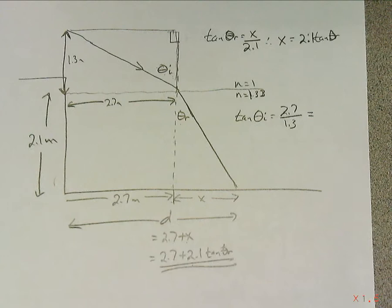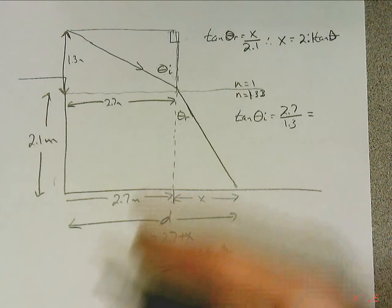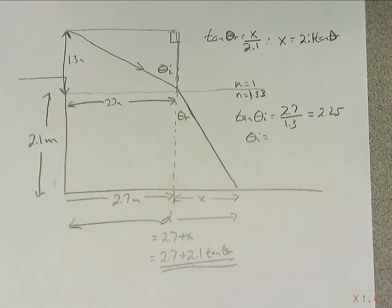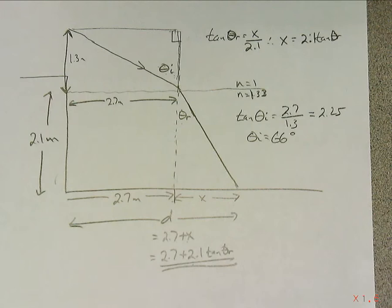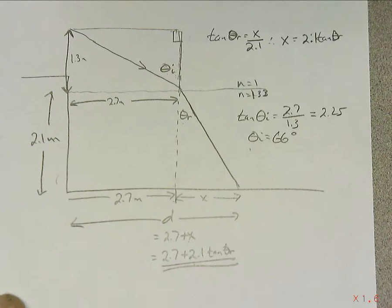And that's, I don't know what it is. Let's see, 2.7 divided by 1.3 is 2.25. So theta incident is equal to 66 degrees. Woohoo! I did everything right there. That's equal to 66 degrees. Okay, the incident angle. That's really useful, isn't it? Of course it is. We found the incident angle not from Snell's Law but from the geometry.